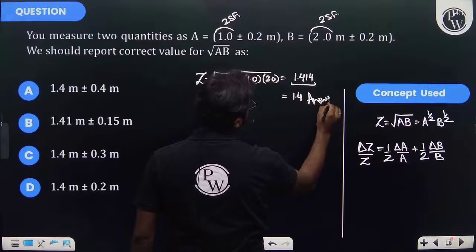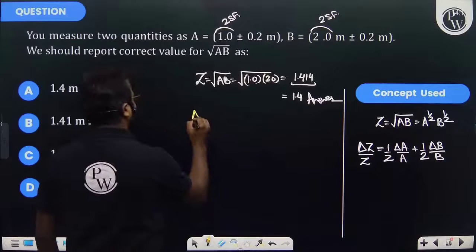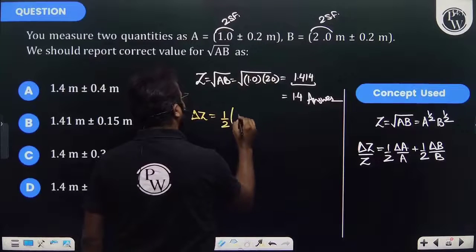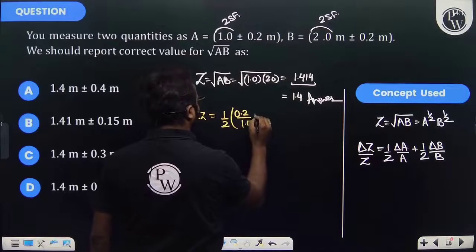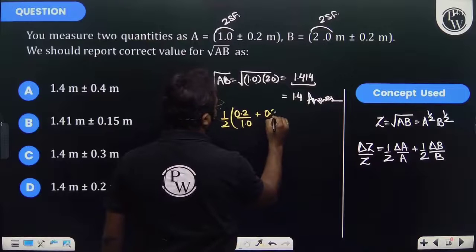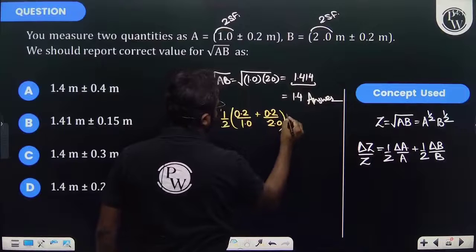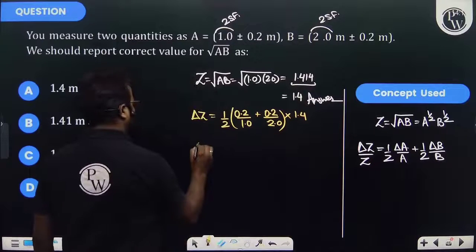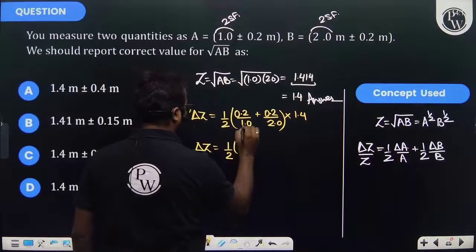Now ΔZ will be (1/2)[0.2/1.0 + 0.2/2.0] × 1.4. So ΔZ = (1/2)[0.2 + 0.1] × 1.4, which is (1/2)(0.3) × 1.4.